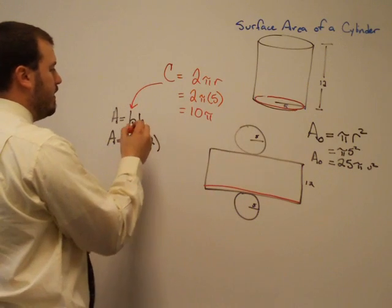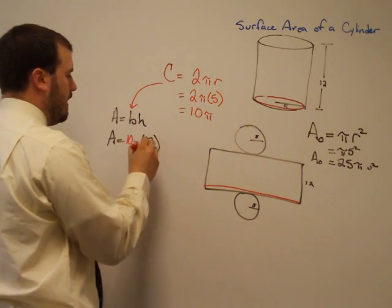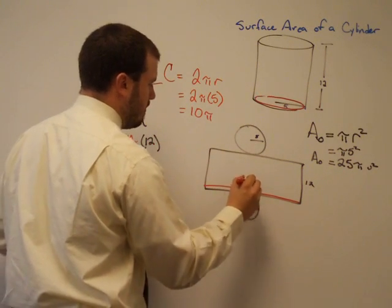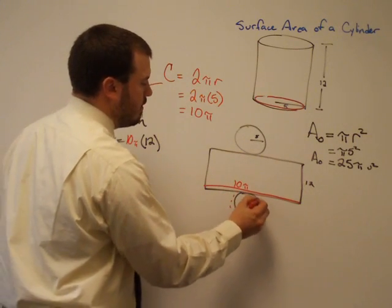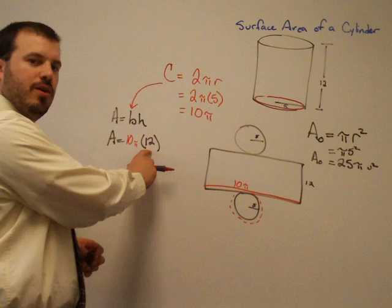So our area of the rectangle is 10 pi, the length of the base, which is the same as the circumference of that circle, times the height, which is 12, or 120 pi.